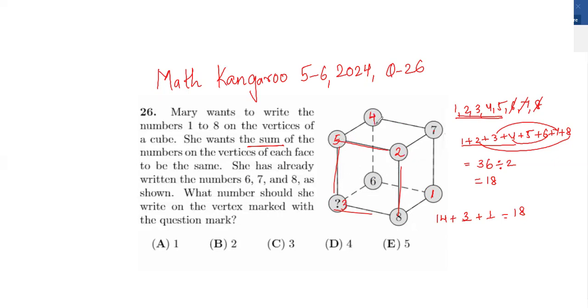So if I check this, any of the vertices, like any cube, any side of the cube, the vertices on any side of the cube will add up to 18. So what should be the number here at the question mark? The number will be number 3.